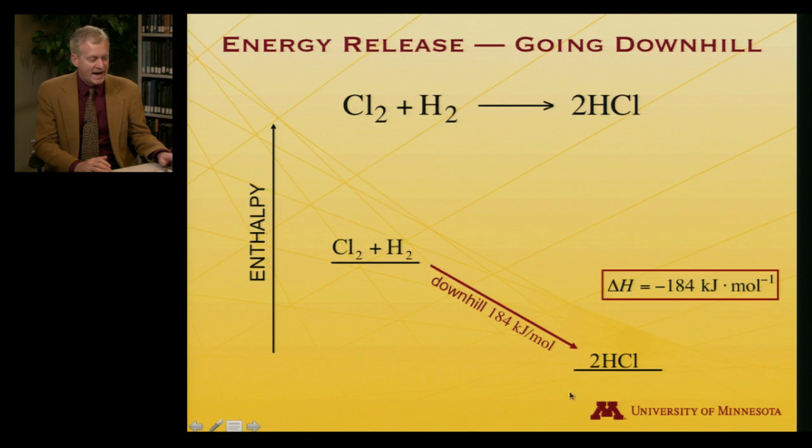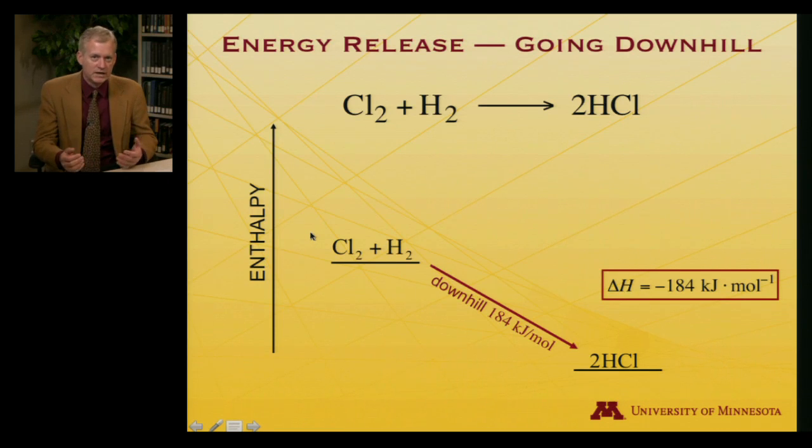If I were to plot this in a fairly typical way that chemists do, so I've got some reaction coordinate moving from left to right on a horizontal axis, and I have an energy or an enthalpy or a free energy, and part of the point of this course will be to start distinguishing more carefully between what those terms mean. For now, I'll label this enthalpy. I know that I go downhill from my reactants here, downhill 184 kilojoules per mole to my products hydrogen chloride.